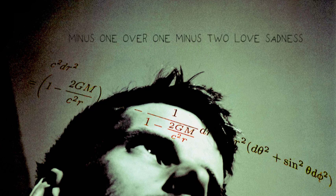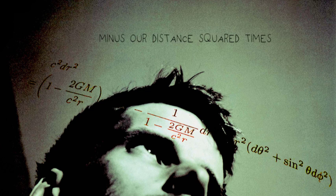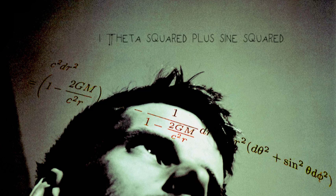Minus one over one minus two GM over E squared our distance, times i our distance squared, minus our distance squared times i-theta squared, plus sine squared theta i-phi squared.